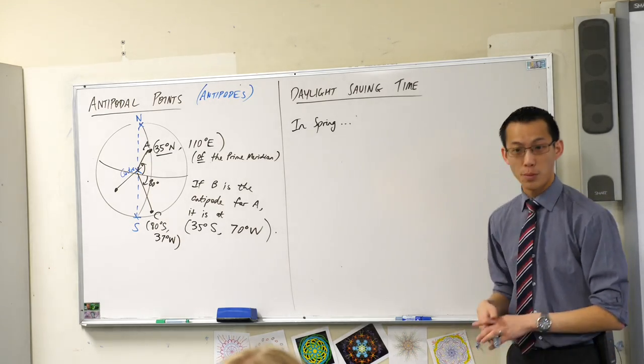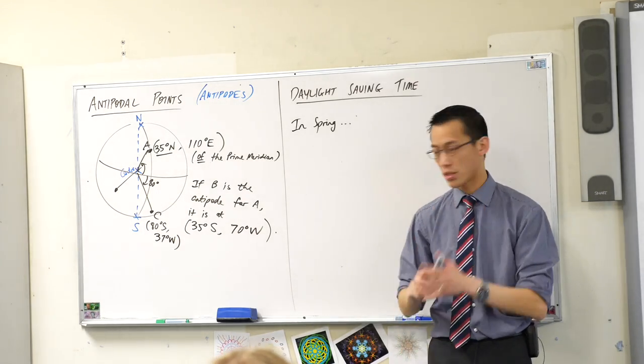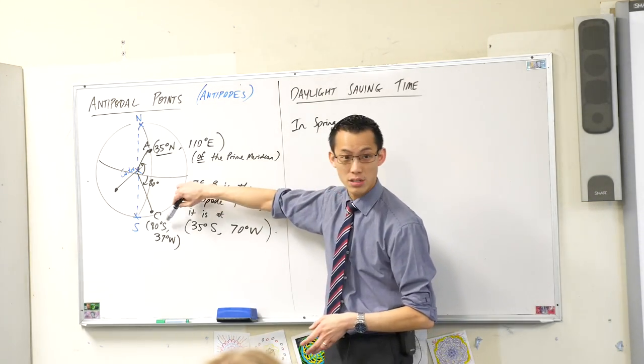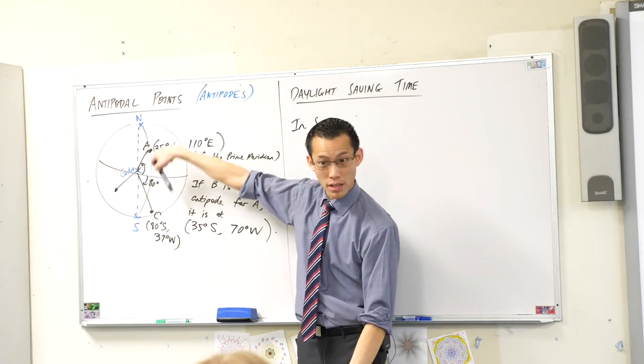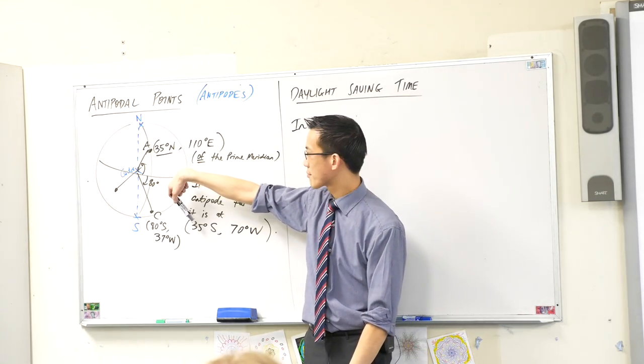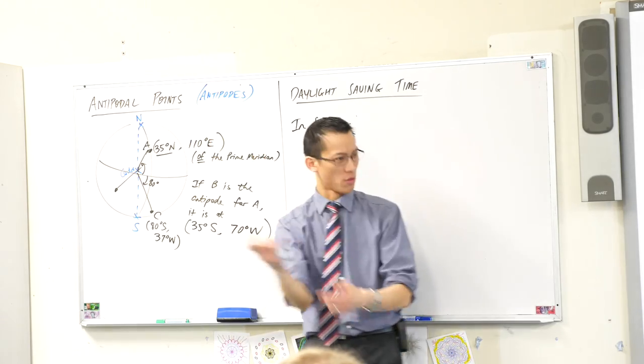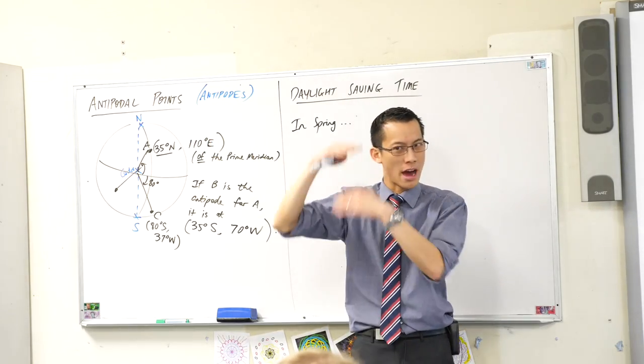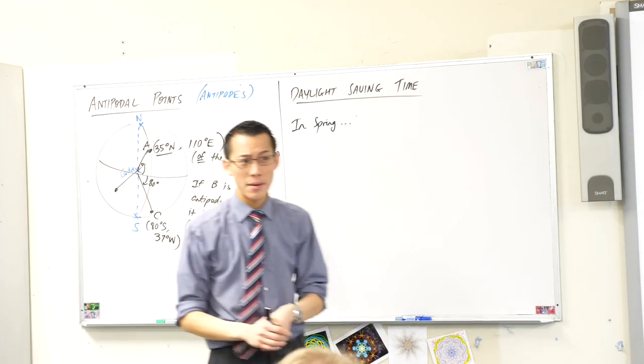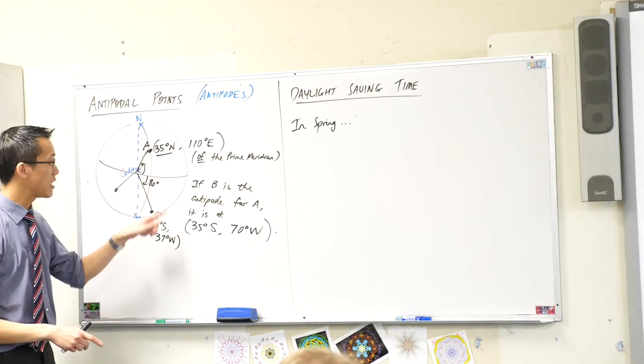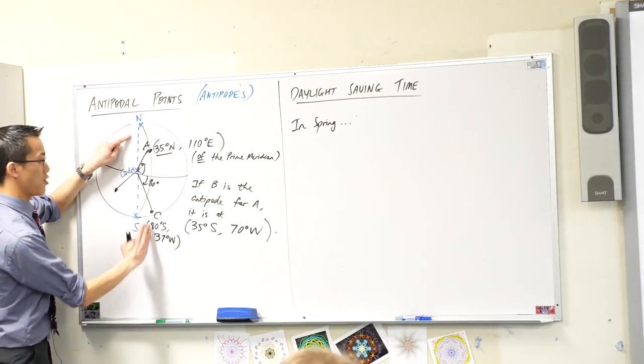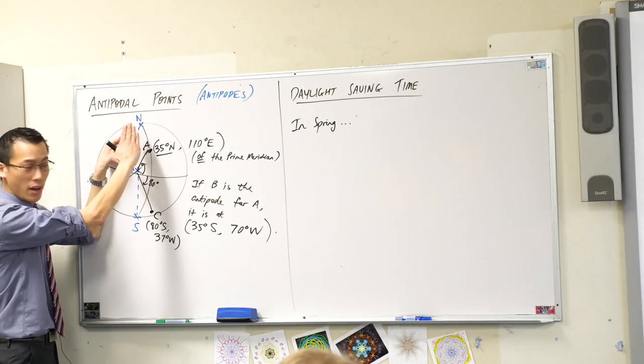Let's think about the antipodal point for C. It's on the opposite side. So let's think about latitude first. You're down the bottom here in the southern hemisphere. Did you notice the antipodal point will always be in the opposite hemisphere? Unless of course you're on the equator. So where will I be? I'll be 80 degrees north, right? You can literally see the line going up through the earth.